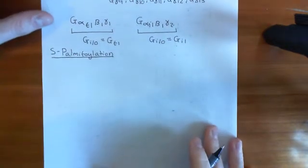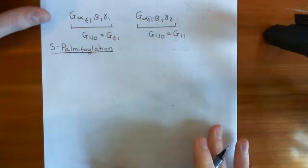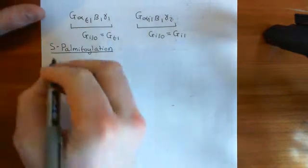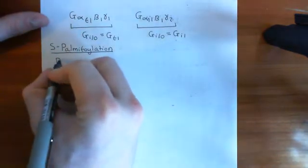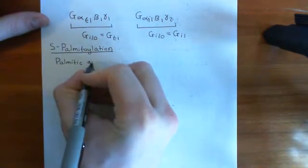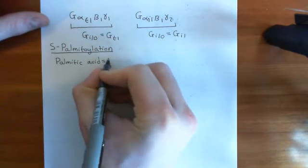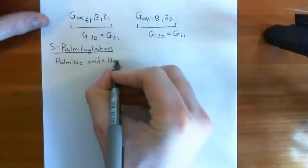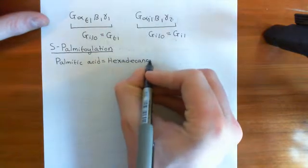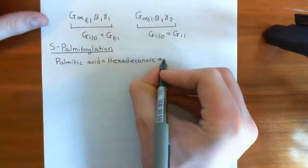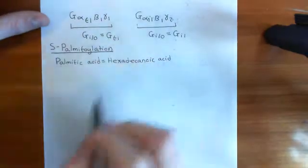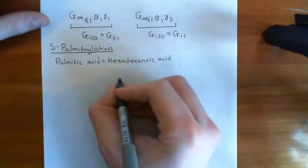In order to explain S-palmitoylation, I need to show you the structure of a palmitoyl group. Palmitic acid is a 16-carbon fully saturated carboxylic acid. Its more correct name is hexadecanoic acid, which is useful because it completely tells you the structure — it tells you instantly that this is a 16-carbon fully saturated carboxylic acid.